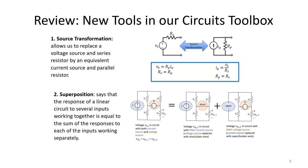In our past three videos we introduced several new tools to analyze DC circuits. We covered source transformation and superposition as helpful tools for circuits containing multiple sources. Source transformation allows us to exchange a voltage source and series resistor with a current source and parallel resistor, or vice versa. Superposition allows us to sum several sources working separately to find the total response.